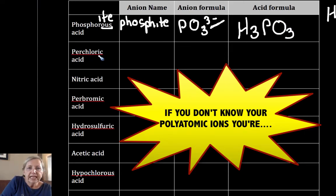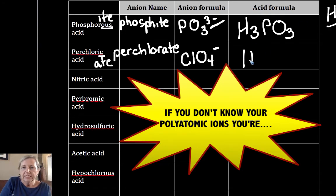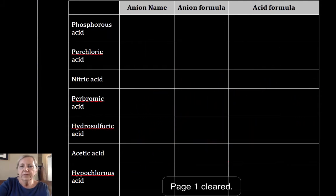Perchloric acid. -Ic came from -ate. So I must be coming from perchlorate ion. And that is ClO4 -1. I've got one negative, so I only need one positive. So that's HClO4.